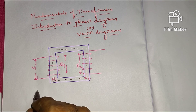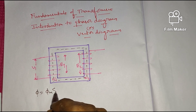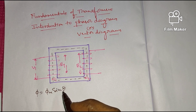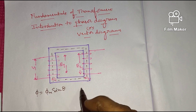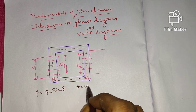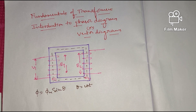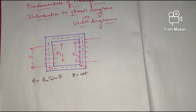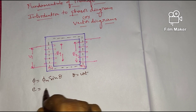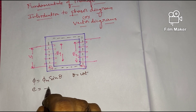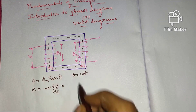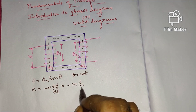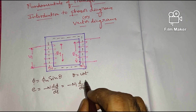Let us consider the flux as phi equals phi_m sin(theta), because we give alternating AC supply here. Hence the flux is considered as phi_m sin(theta) where theta equals omega times t. Omega is the angular velocity and t is the time. Then according to Faraday's law of electromagnetic induction — the second law — the EMF induced is given by minus N times d(phi)/dt. So when you consider the primary winding turns, this formula becomes minus N1 times d/dt of phi_m sin(theta).